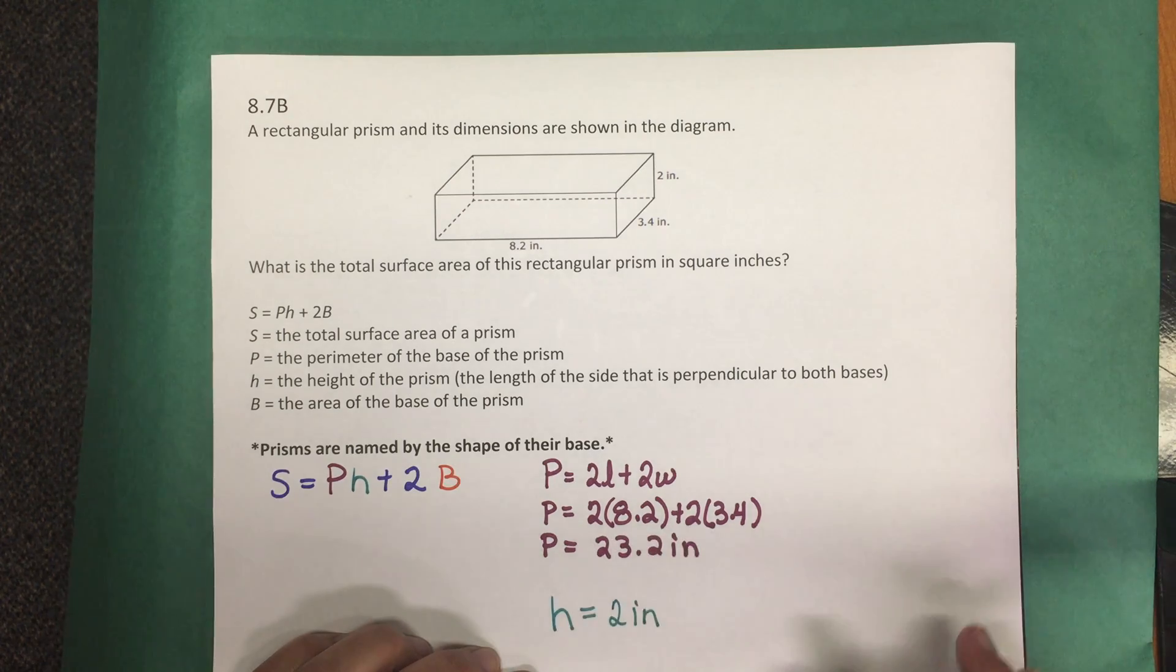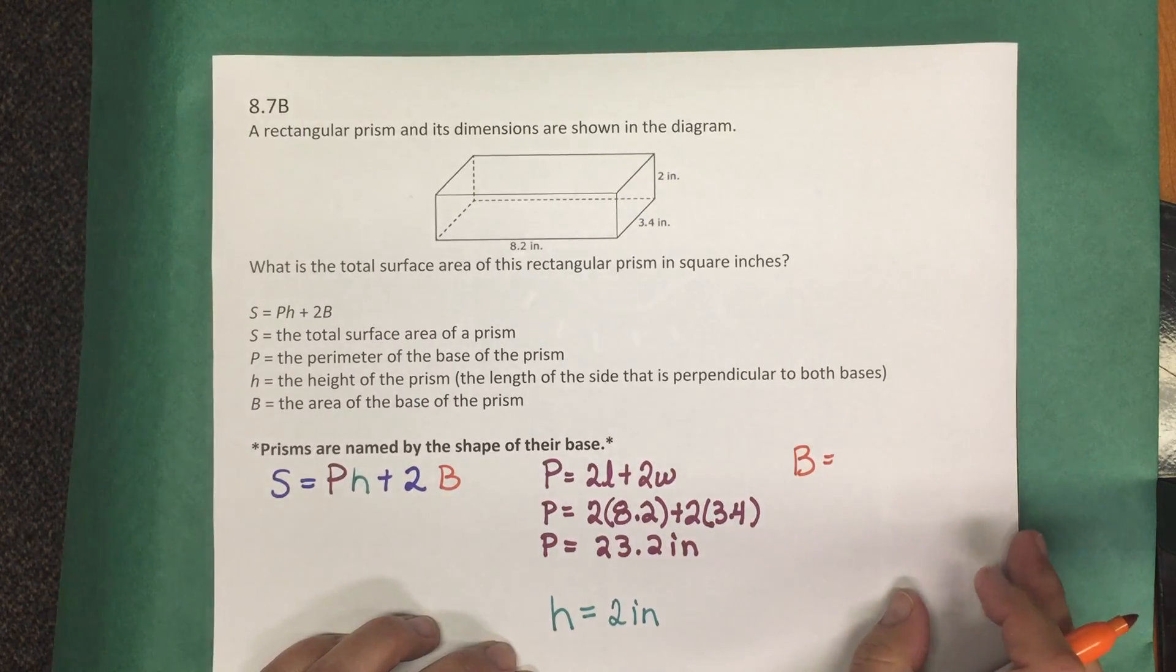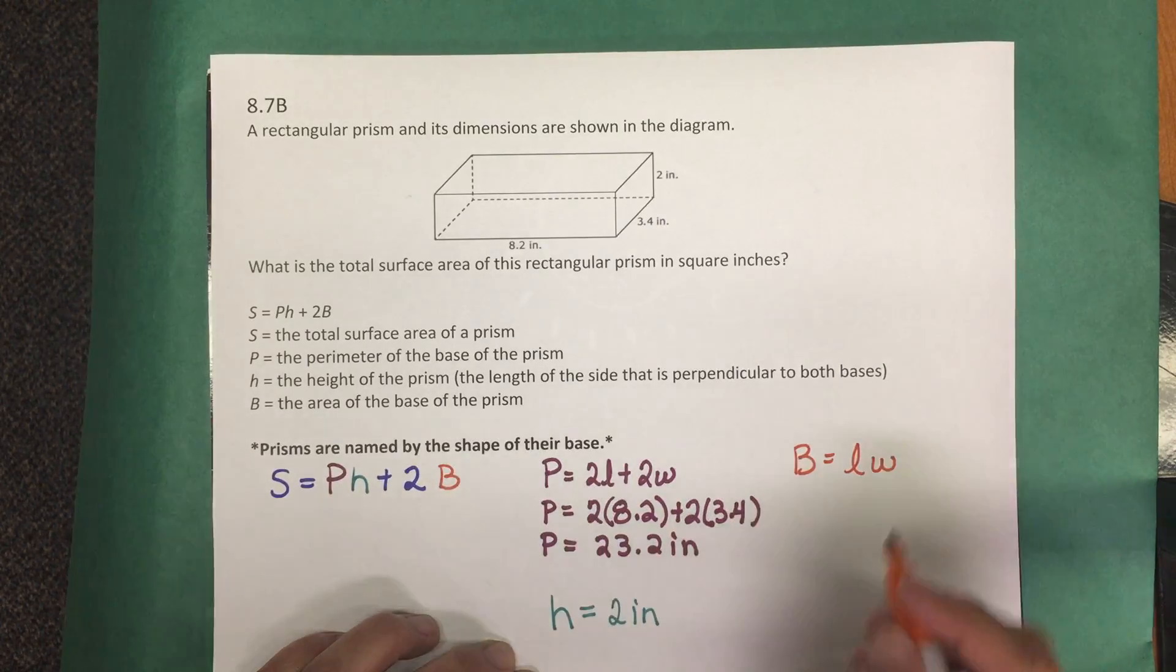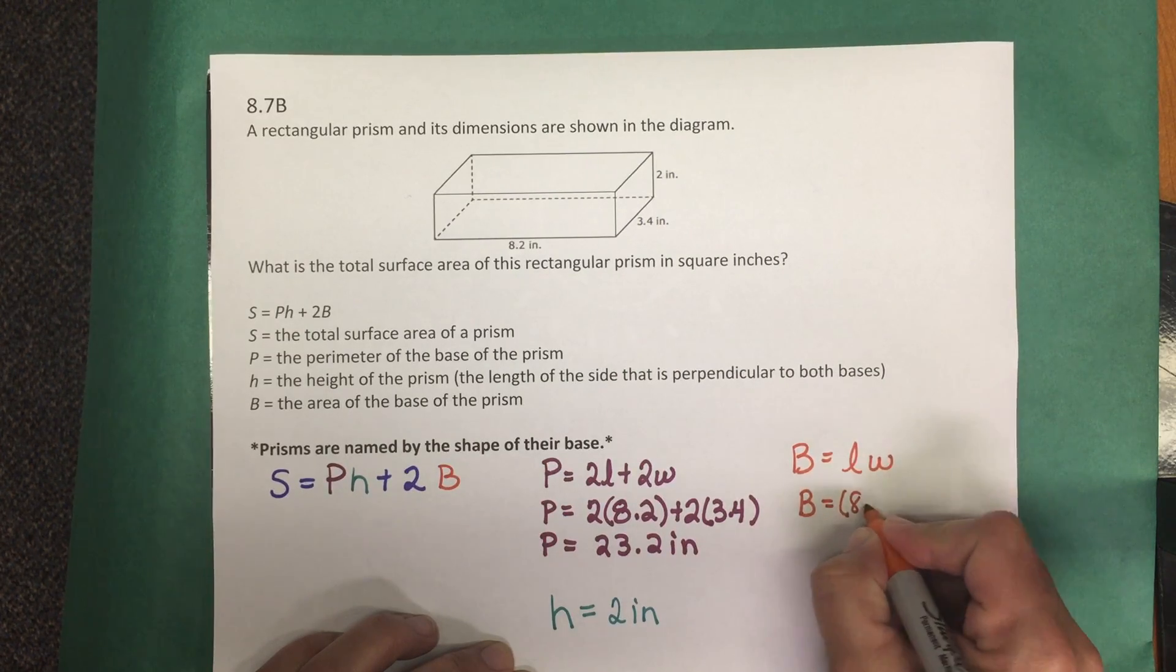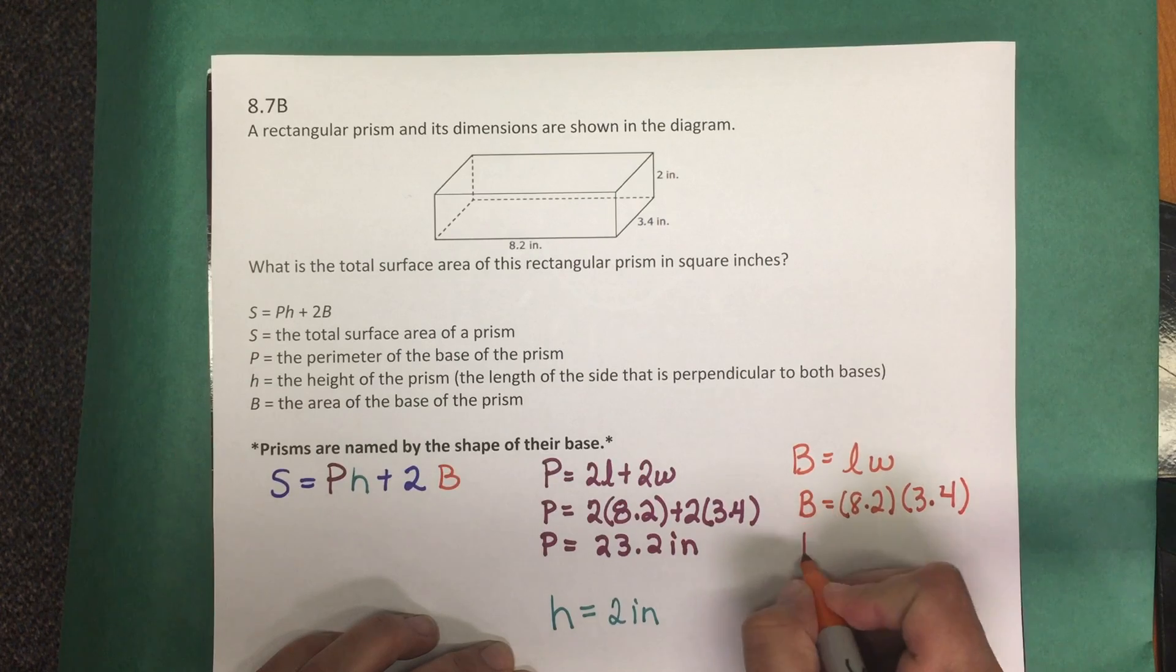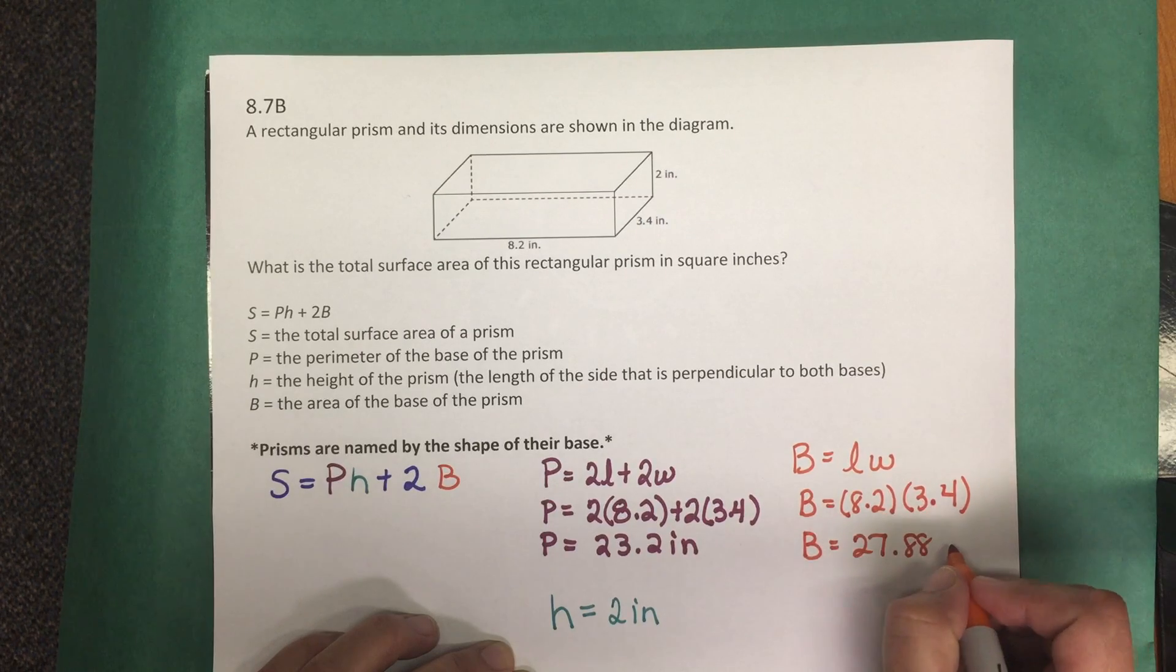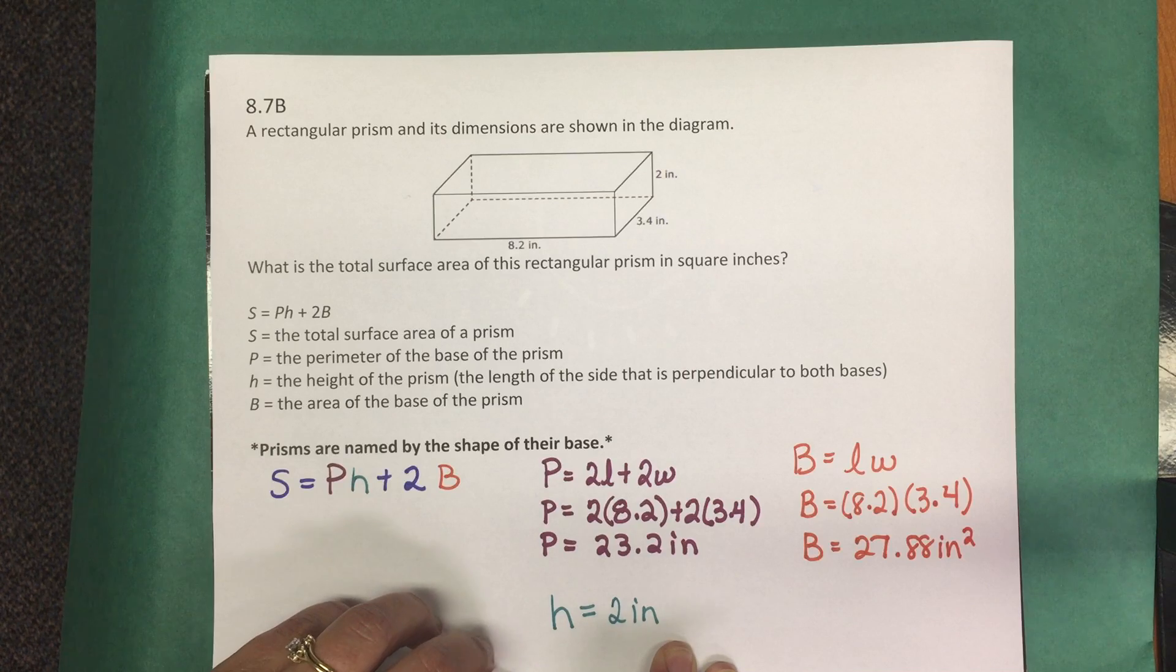Now we're going to find the area of the base. The base is a rectangle, so the formula for the area of a rectangle is length times width. So the area of the base: 8.2 times 3.4. Multiply that and we're going to get a value of 27.88 inches squared for the area of the base.